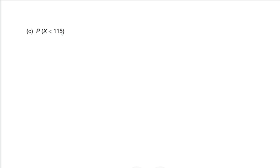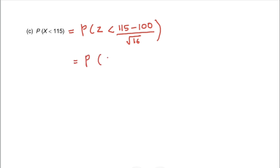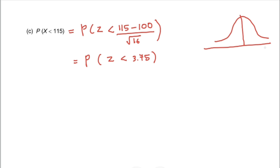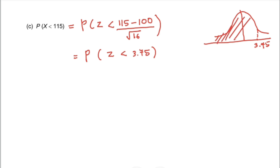For example 1c, P(X < 115): we standardize by taking 115 minus 100, divided by the square root of 16, giving P(Z < 3.75). On the bell shape, 3.75 is a positive number far to the right, so the shaded area for Z less than 3.75 is greater than 0.5, since half the bell shape gives 0.5.